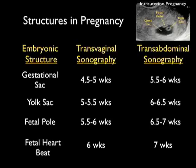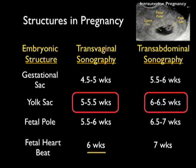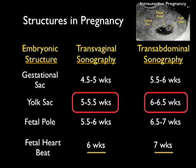Here's a table showing pregnancy structures and approximately when they're seen on transvaginal versus transabdominal sonography. The gestational sac is seen on transvaginal sonography at about 4.5 to 5 weeks and about a week later on transabdominal sonography. The yolk sac is seen at about 5 to 5.5 weeks on transvaginal sonography — circled in red because this is really how we diagnose an intrauterine pregnancy. The fetal pole is seen at about 5.5 to 6 weeks on transvaginal sonography and a week later on transabdominal sonography.